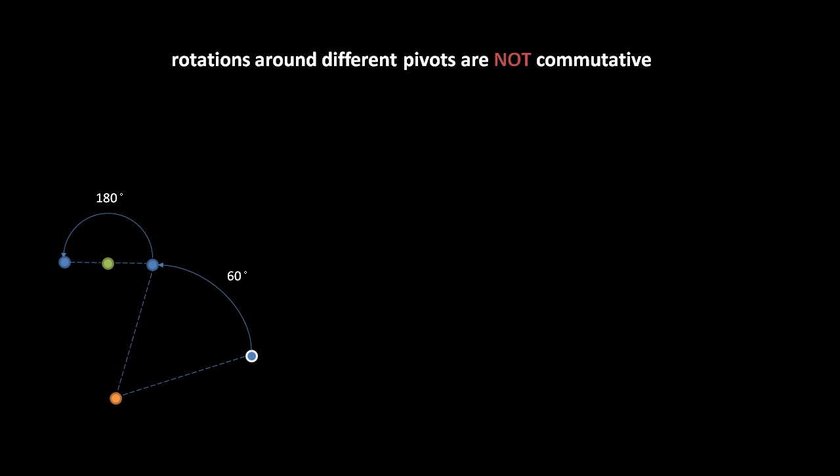It's very important to understand that rotations, unlike translations, are not always commutative. A series of rotations around the same pivot are commutative, but rotations around different pivots are not. Here, for example, we have a starting point, the blue dot with white outline, which we first rotate 60 degrees around the orange dot, then 180 degrees around the green dot. Notice the end position of the blue dot is to the left of the green dot.